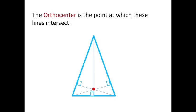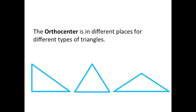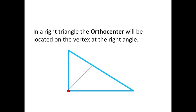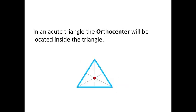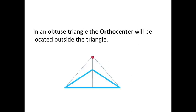The orthocenter is in different places for different types of triangles. In a right triangle, the orthocenter will always be located on the vertex at the right angle. In an acute triangle, the orthocenter will always be located inside the triangle. In an obtuse triangle, the orthocenter will always be outside the triangle.